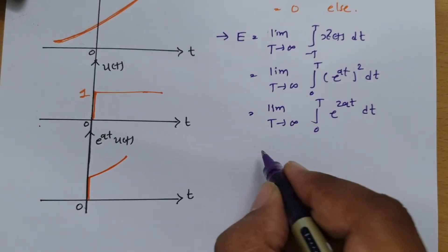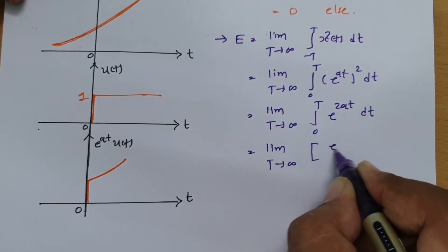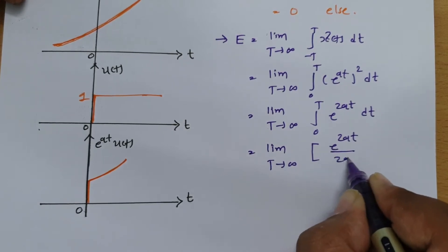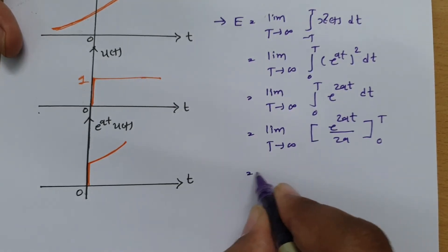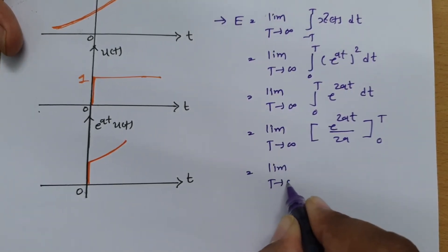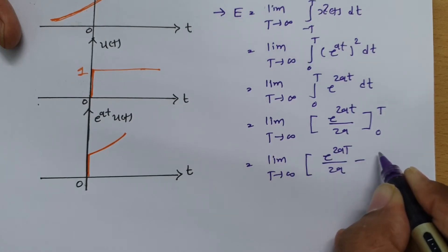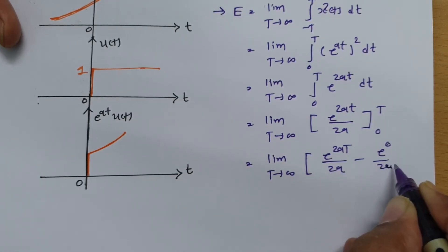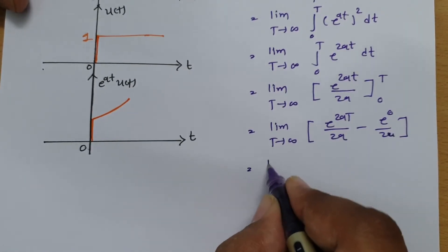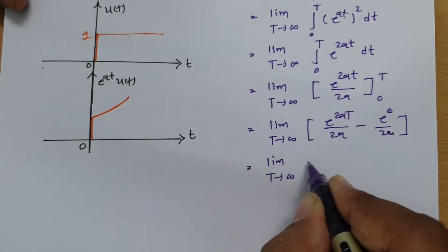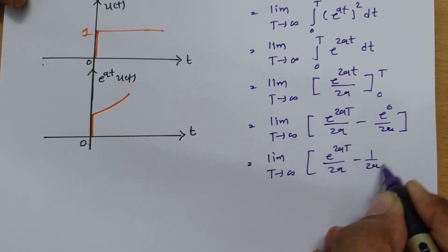Performing the integration, we get: limit as T→∞ of [e^(2at) / (2a)] evaluated from 0 to T. Placing the limits gives: e^(2aT) / (2a) minus e^0 / (2a), which simplifies to limit as T→∞ of [e^(2aT) / (2a) − 1/(2a)].